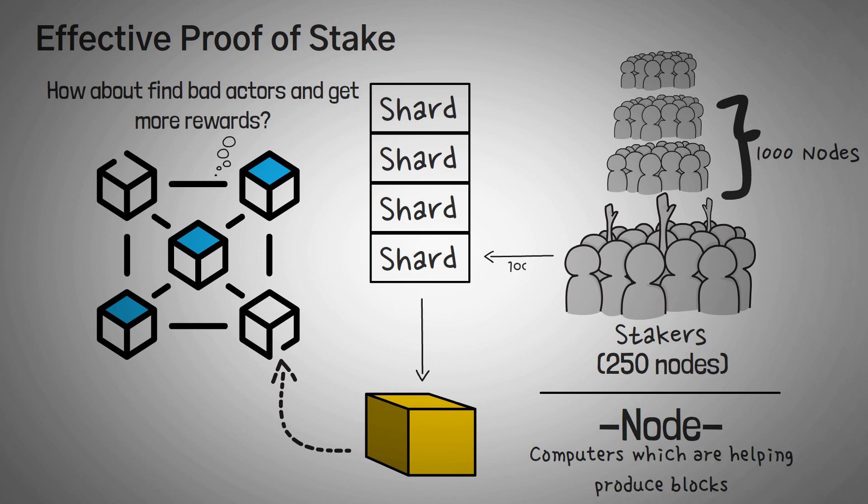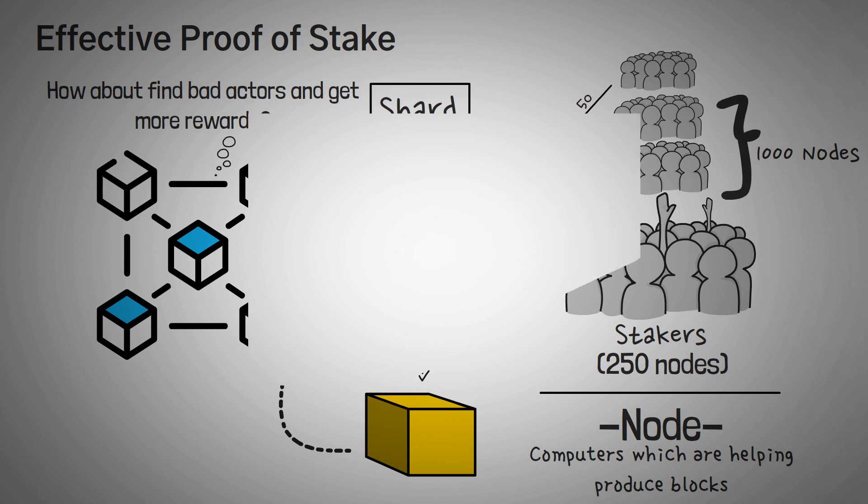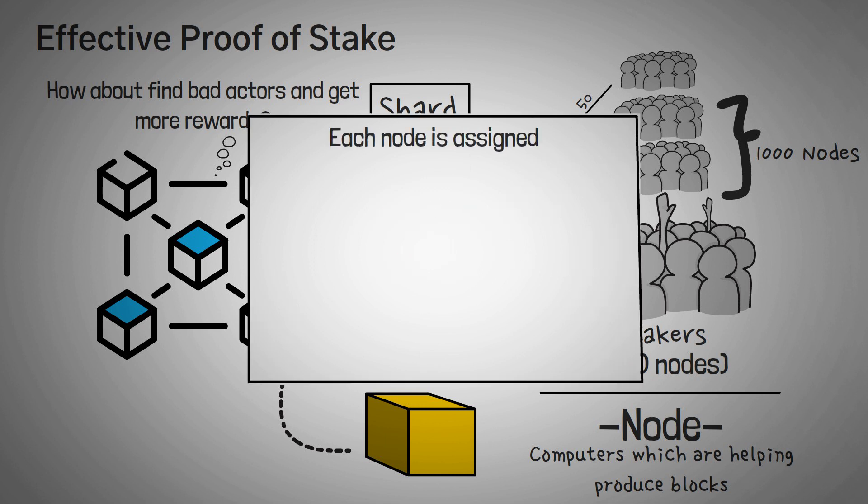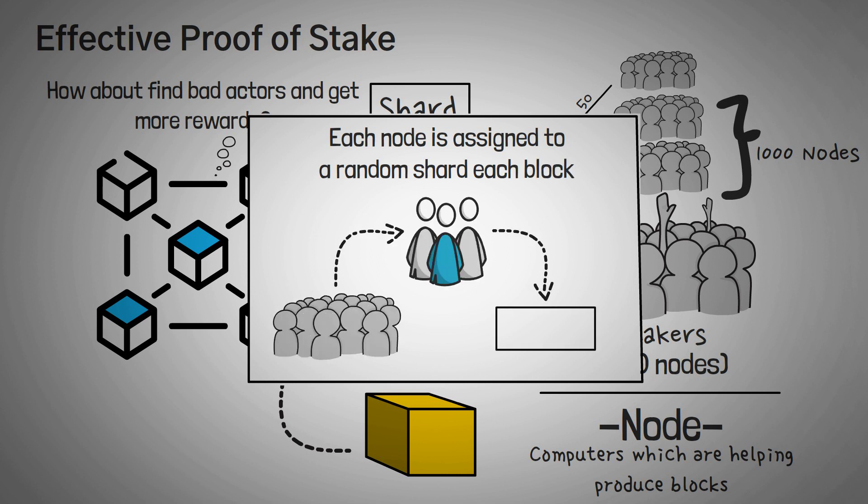Anyways, each time a shard confirms a new block, it's a new set of randomly selected 250 nodes. All right, that may have been confusing. Let me put it even more simply. This means each node is assigned to a random shard every block, meaning it would be very difficult for a bunch of nodes to collude and join together and own one shard, let alone the entire network.